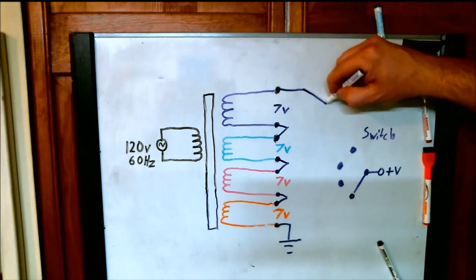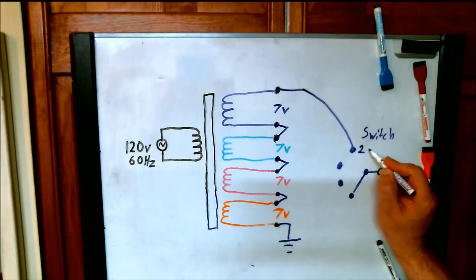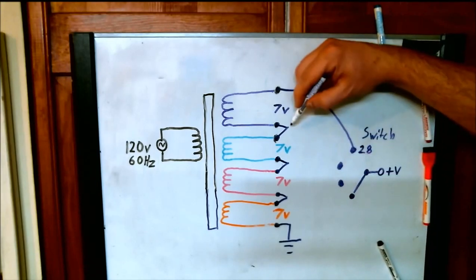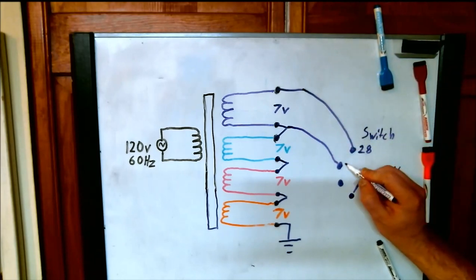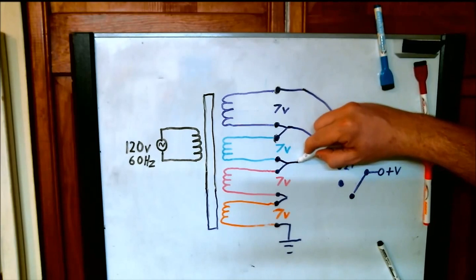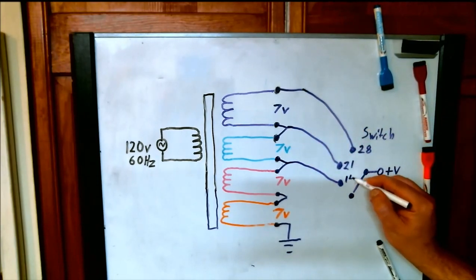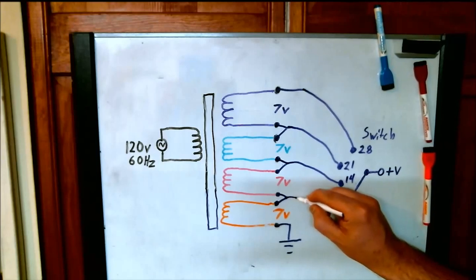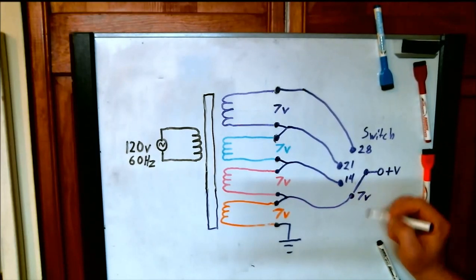We'll put this one over here. So that would be our 28 volt position. And one here. This would be our 21 volt switch position. And one here. This would be our 14 volt switch position. And one here. Which would be our 7 volt switch position.